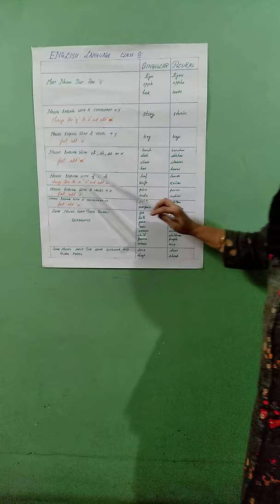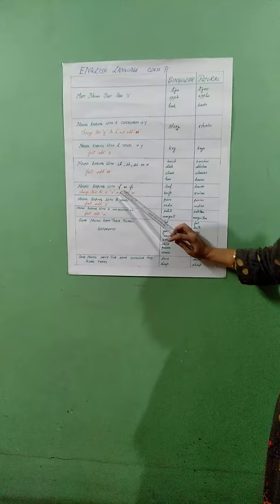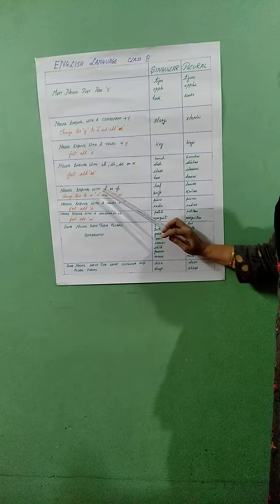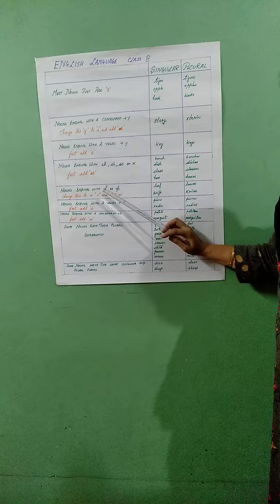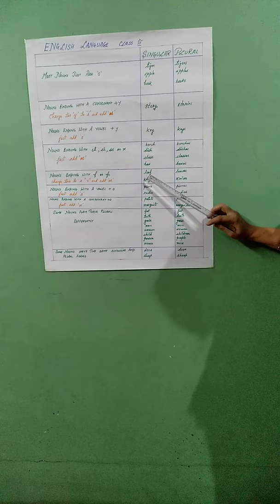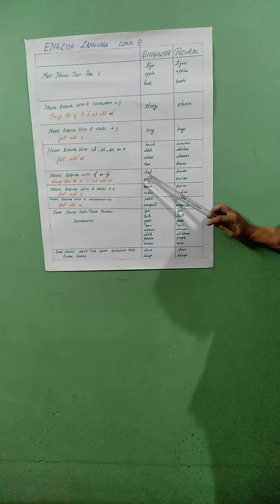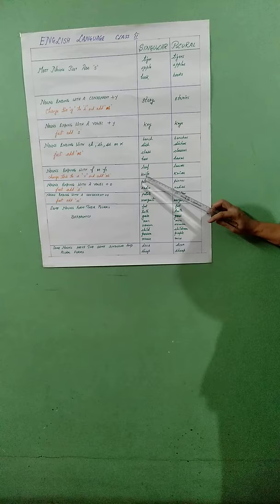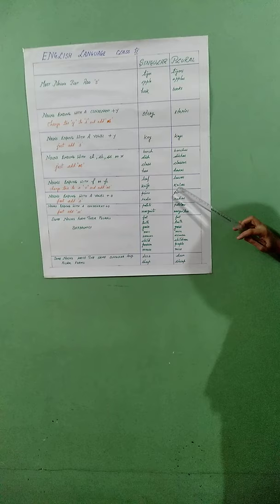Now the fifth rule: nouns ending in F or FE. For these words, you change the F or FE — in place of that you use V and then add ES. So you remove the F or FE, write V, and add ES. Like the word leaf: your F will be changed into V and ES will be added. Similarly, knife — this FE will be changed into V and ES will be added. I hope children, you are getting my points.